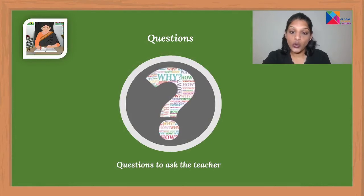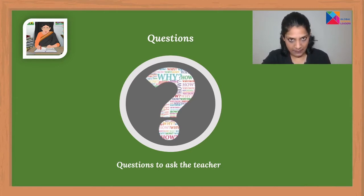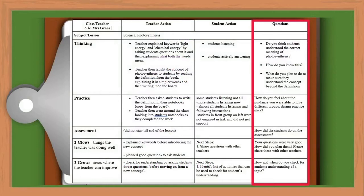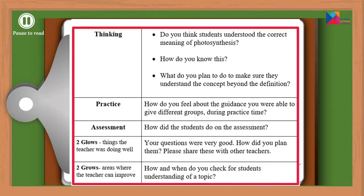We don't want feedback to be just one way, so we also want to think about the questions to ask the teachers. These questions should either help the teacher reflect on their lesson and the choices they made, or help us fill in the blanks with what we missed in the lesson. Let me zoom into the question column. Here are some questions we could ask the teacher to help her reflect: Do you think students understood the correct meaning of photosynthesis? How do you know this? What do you plan to do to make sure that they understand the concept beyond the definition? The questions could sometimes also be about things we are unsure of. Maybe the teacher had plans to do more with the definition either later in the lesson or the next day. We want to leave room to hear the teacher describe their thinking before making and sharing any conclusion with the teacher.